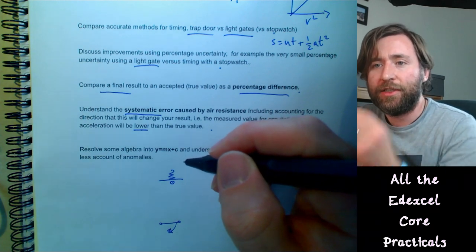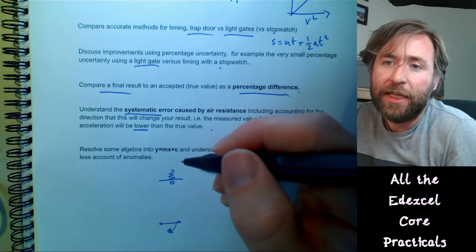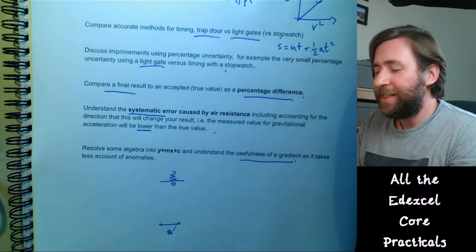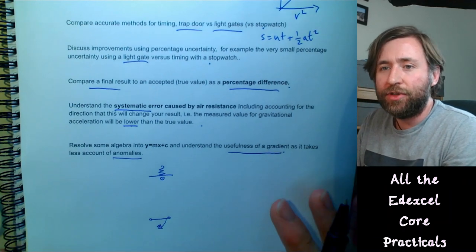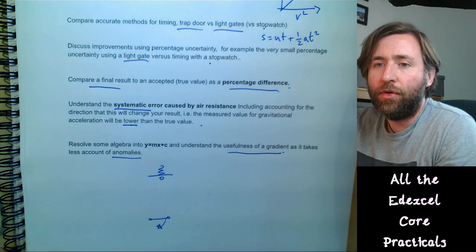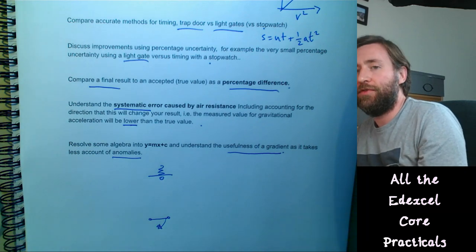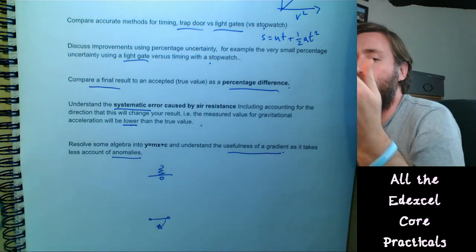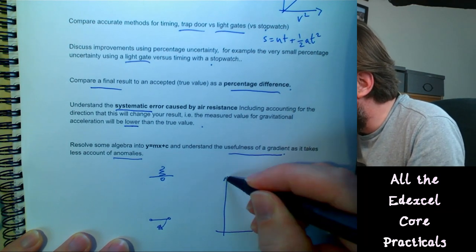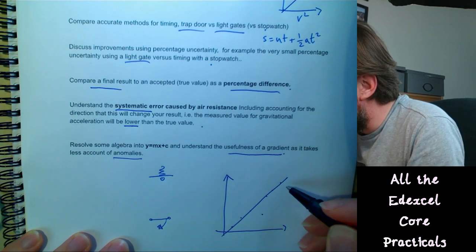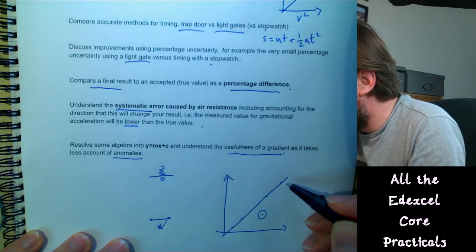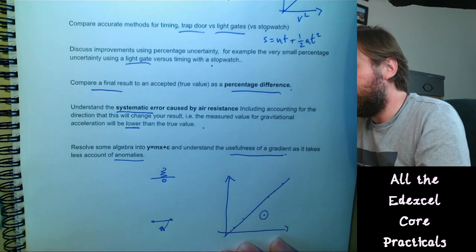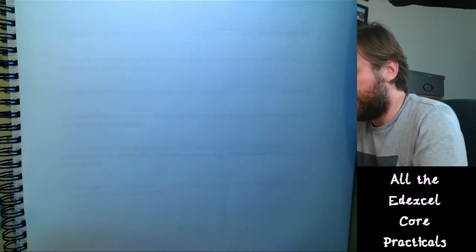Much of this core practical work involves taking some algebra and rearranging it into y = mx + c so you can plot a straight line graph. A key advantage of using a gradient rather than an arithmetic mean is that the line of best fit takes less account of anomalies — it acts as a graphical average. If you have an anomaly, you ignore it when drawing the line of best fit, whereas an anomaly in the arithmetic mean has a large effect on the final result.